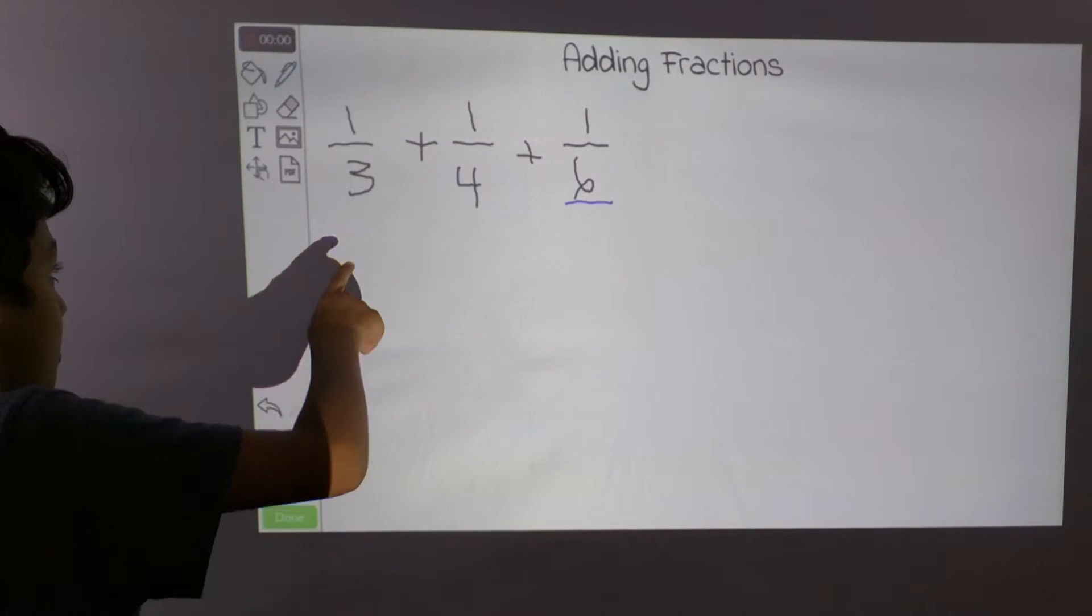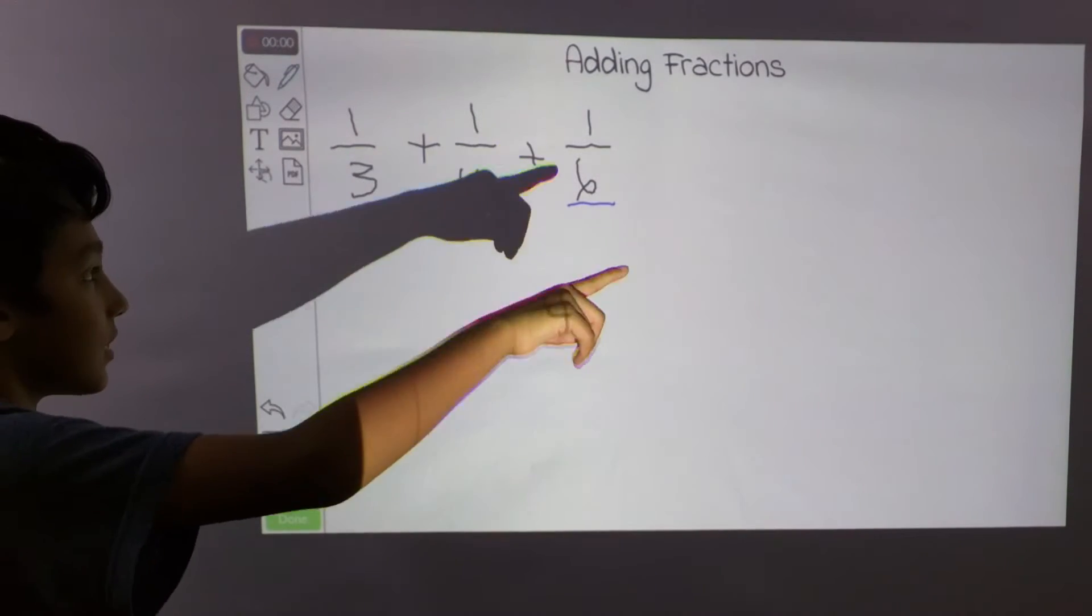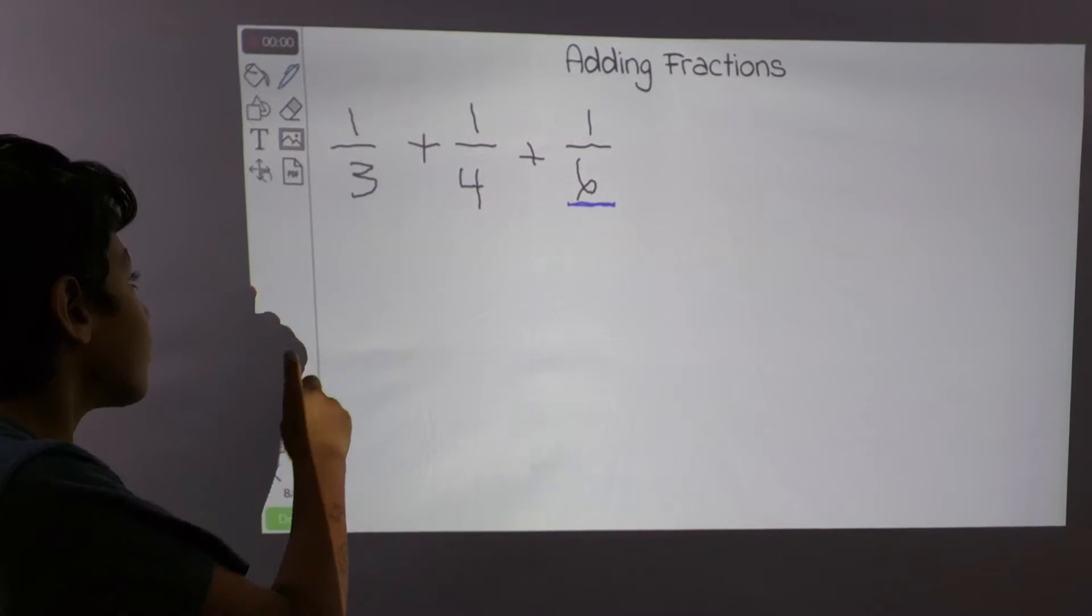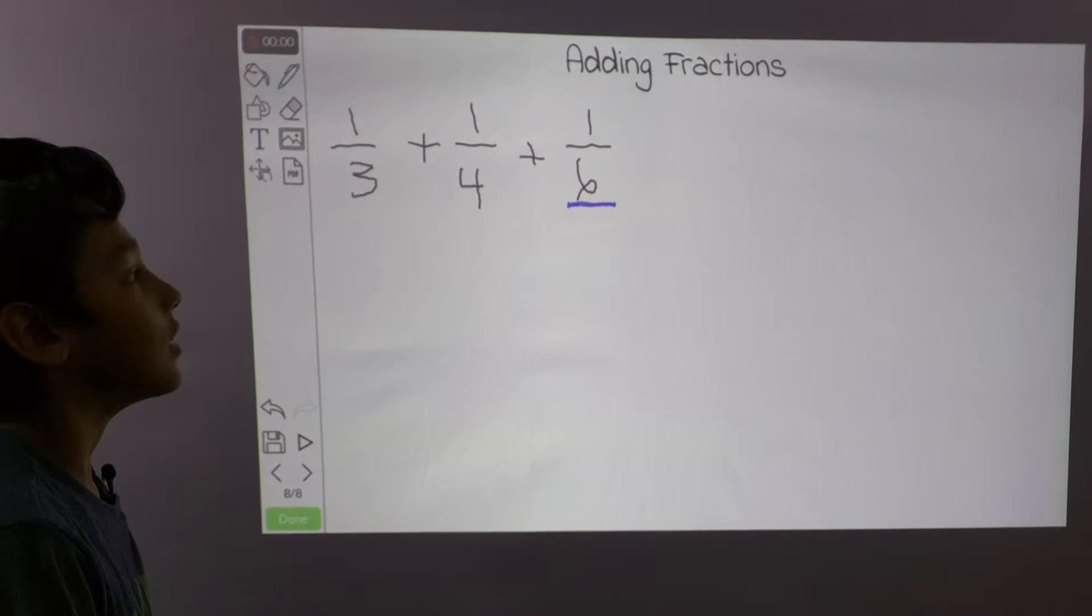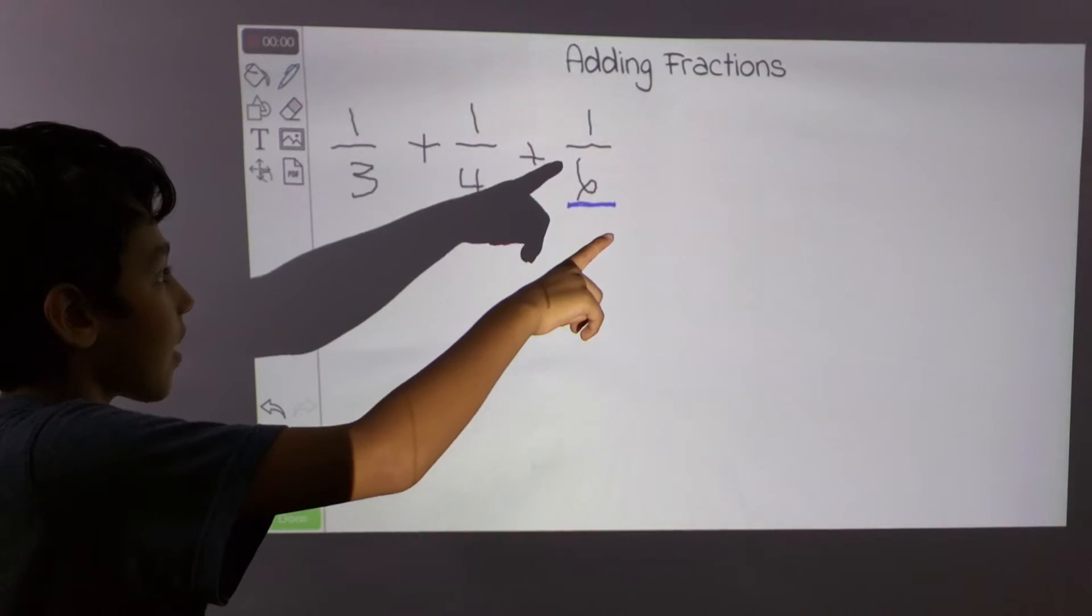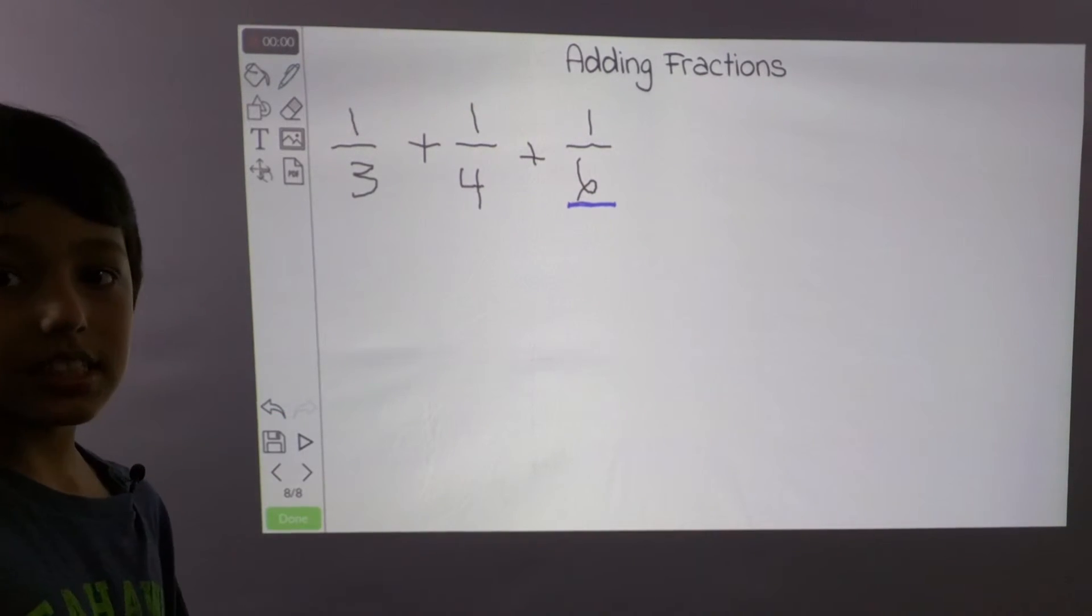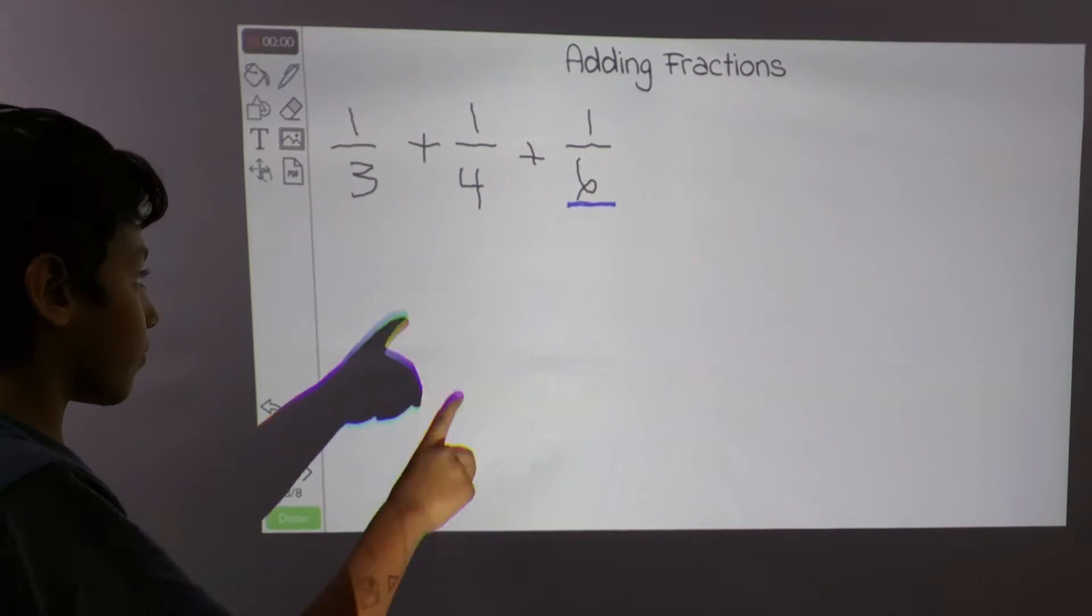Our last problem is 1 third plus 1 over 4 plus 1 sixth. And now we have 3 different denominators for 3 different fractions. So let's stick to what we know. So we know that 6 is the biggest denominator, and 3 goes into 6, but 4 does not.